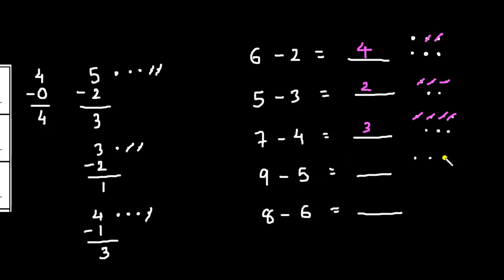9 minus 5. Drawing 9 dots: 1, 2, 3, 4, 5, 6, 7, 8, 9. Now, let's cut 5 dots. 1, 2, 3, 4, 5. So, we are left with 4 dots.